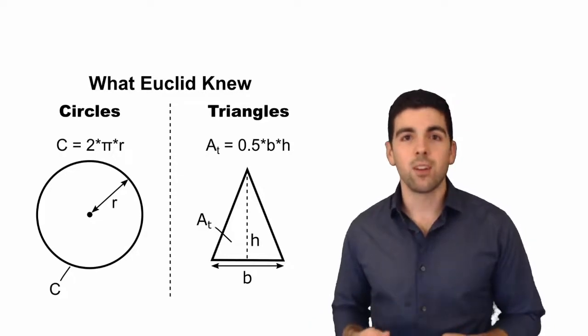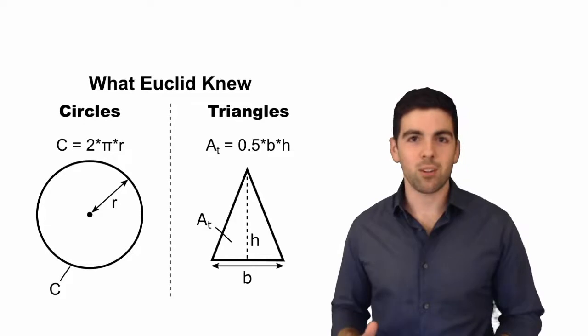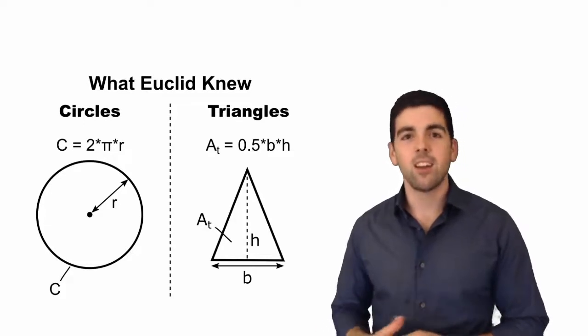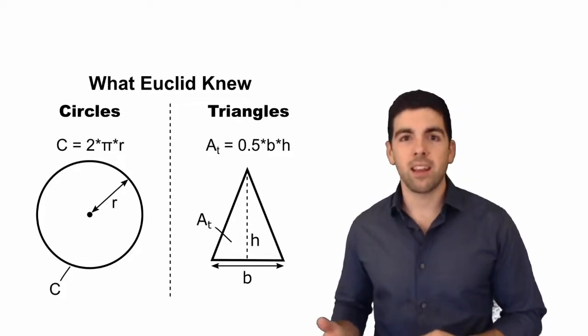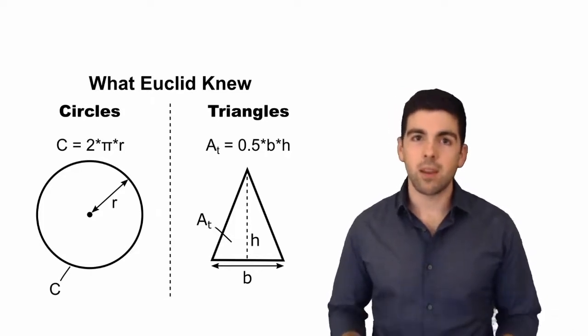And then he also knew the area of a triangle. Remember this is the guy that literally wrote the books, multiple, on geometry. So he knew that an isosceles triangle has an area equal to one-half times the height of the triangle times its base.